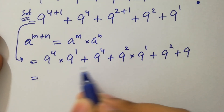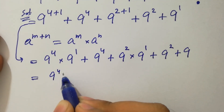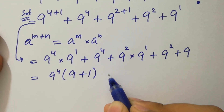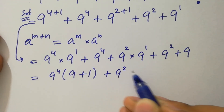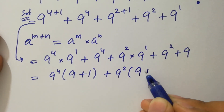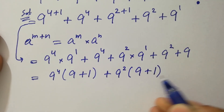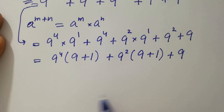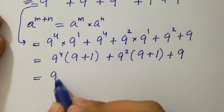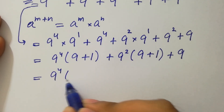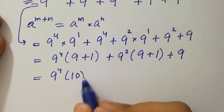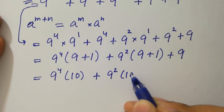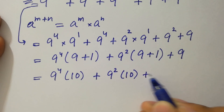Here, 9 to the power 4 can be common, giving us 9 plus 1. And 9 squared can be common, giving us 9 plus 1 plus 9 as it is. So we have 9 to the power 4 times (9 plus 1), plus 9 squared times (9 plus 1), plus 9. Since 9 plus 1 is 10, each group gives a factor of 10.